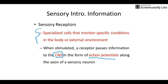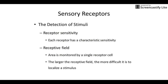Something to be aware of: not all receptors are exactly the same. They have varying sensitivity — some are sensitive to really light touch while others require much more pressure. Some respond to different wavelengths of light. They also have the concept of a receptive field, which is the area monitored by a single receptor cell.